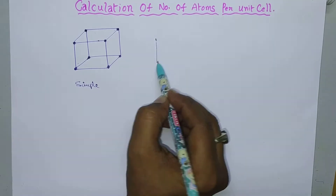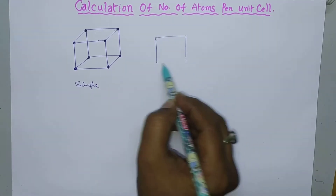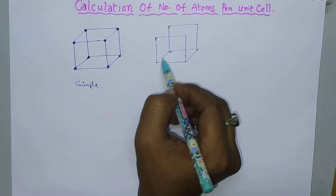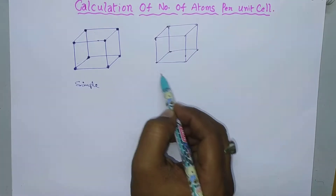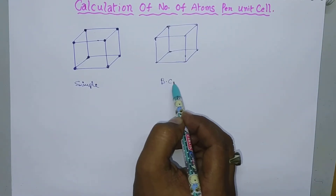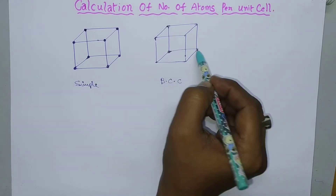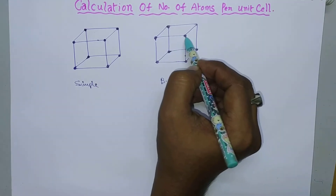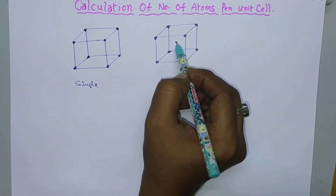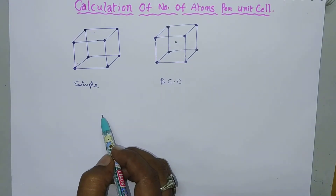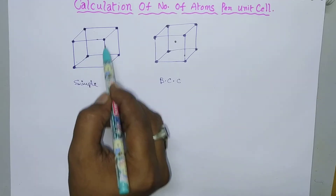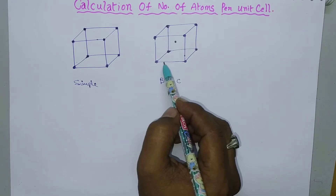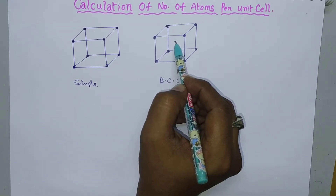In the case of a body-centered cubic cell, the lattice points are present at the corners and also at the center of the body. So in addition to the corner points, a lattice point is present at the center of the body.